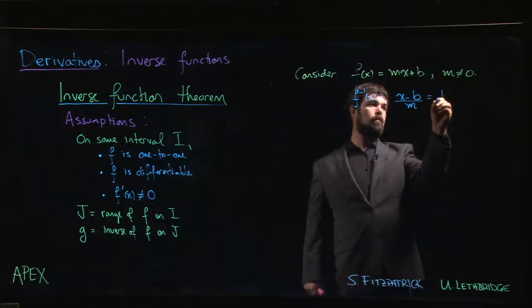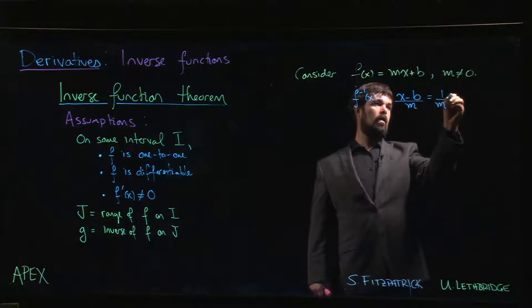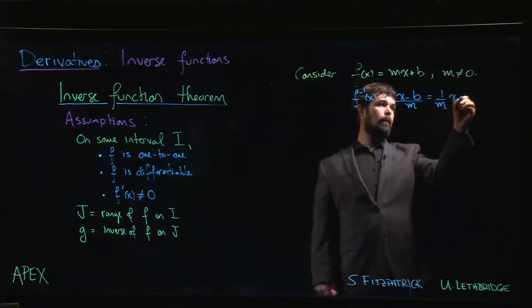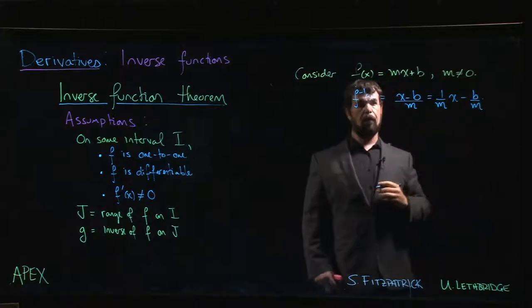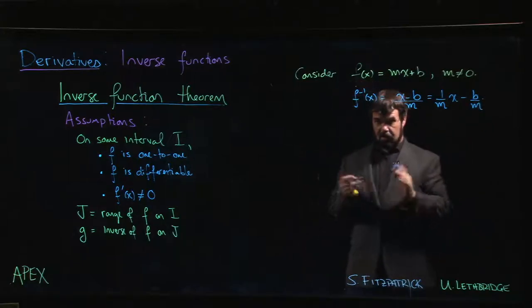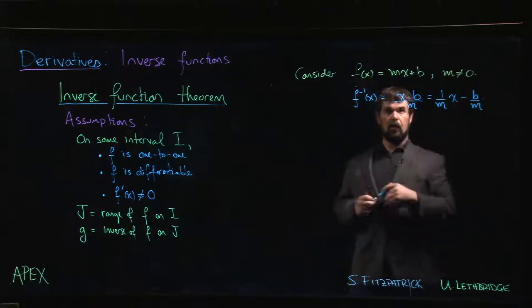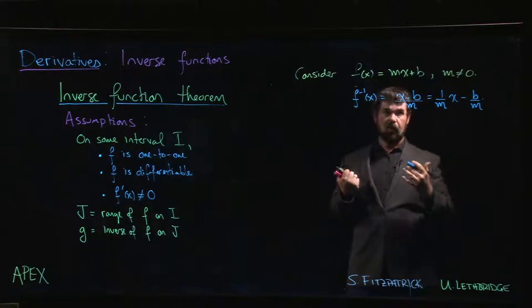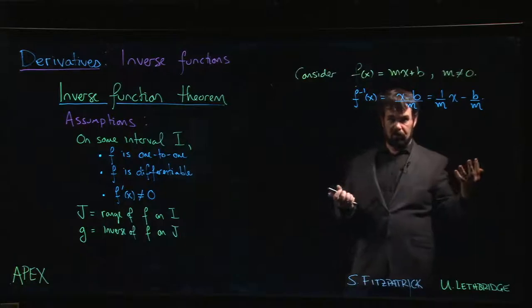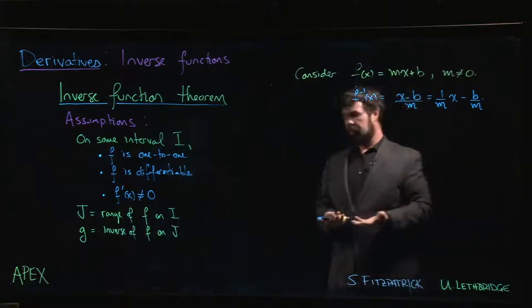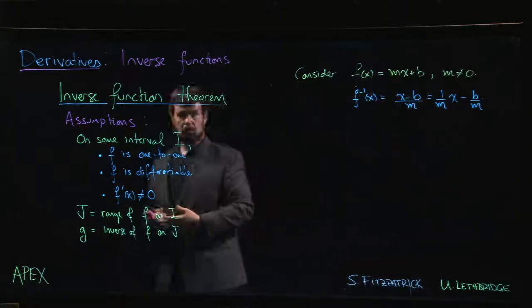So we could write this as 1 over m times x, or (x minus b) over m. And feel free to sit down and confirm that these are indeed inverses of each other. Remember that one way you can do that is you can compose the two functions and see that you get back to where you started—you always just get x out when you compose them.